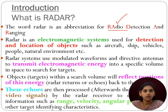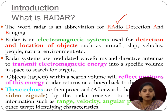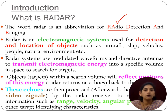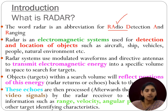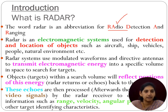Radar is an abbreviation for Radio Detection And Ranging. It is an electromagnetic system used for detection and location of objects. The objects can be of any type, either live or non-live, such as aircraft, ships, vehicles, human beings, natural environment, trees, and buildings. Radar systems use modulated waveforms directed via antennas to transmit electromagnetic energy into a specific volume in space to search for targets.